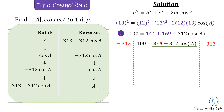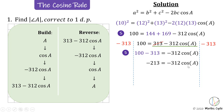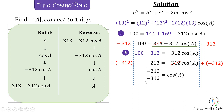First, subtract 313 from both sides — that cancels the 313, and on the left we have 100 take away 313. Simplify: we get our simplified equation. Next, cosine A is multiplied by negative 312, so to reverse multiplying we divide both sides by negative 312. That cancels on the right, and on the left we have negative 213 divided by negative 312, leaving cosine of A on the right.